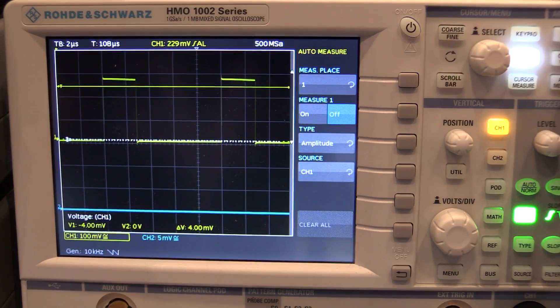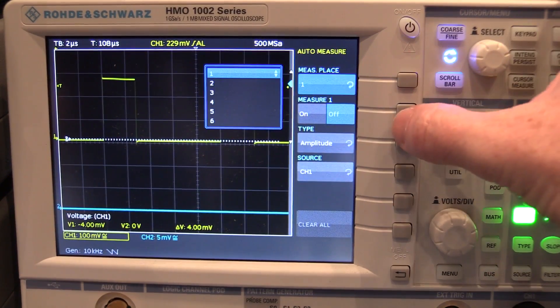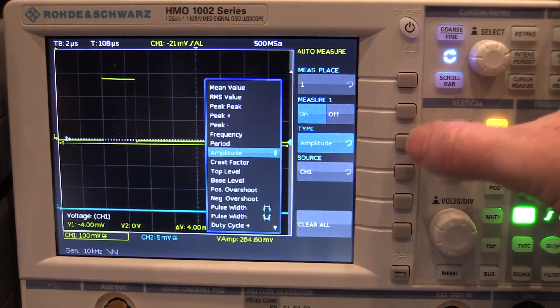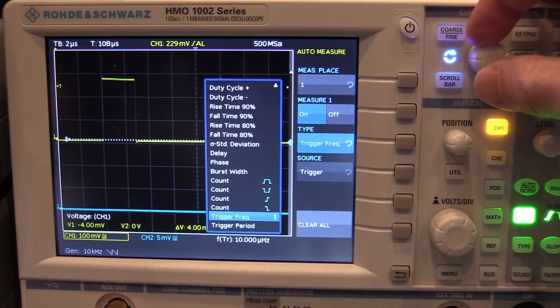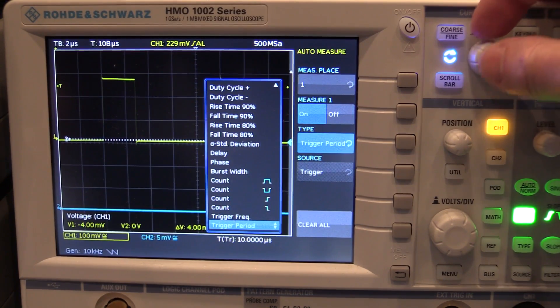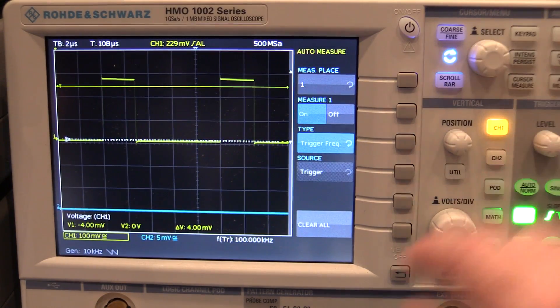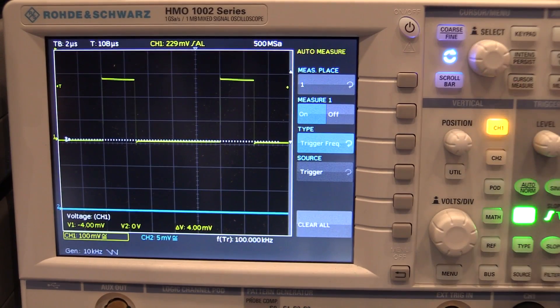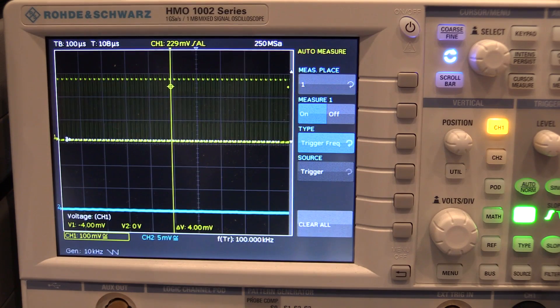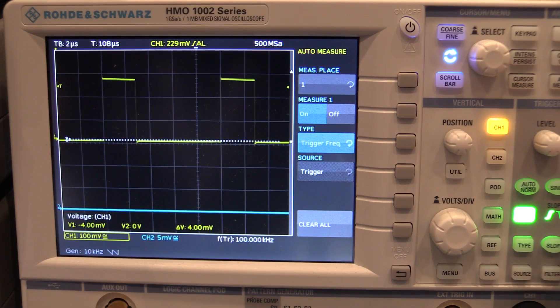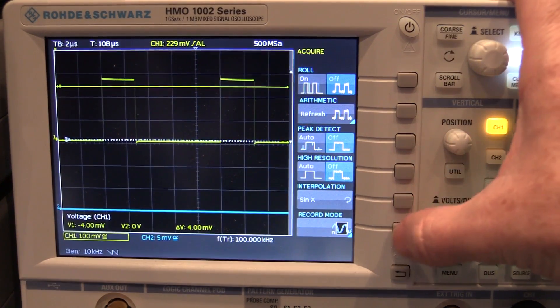It's got no shortage of measurement options. You've got auto measure stuff here. And of course you can select your source and do all sorts of weird and wonderful stuff. Let's check it out. Here we go. Trigger frequency. We can select our trigger frequency. There we go. 100 kilohertz.